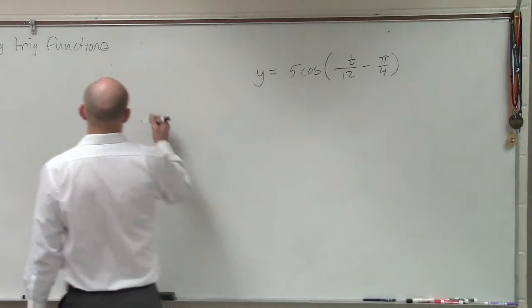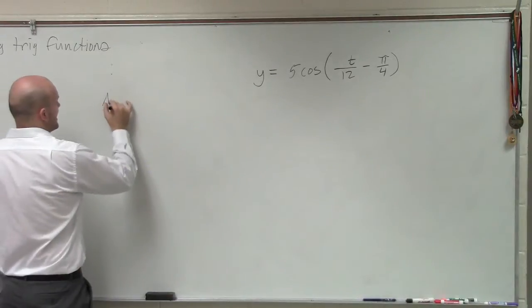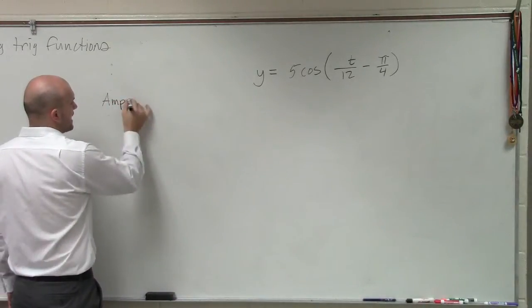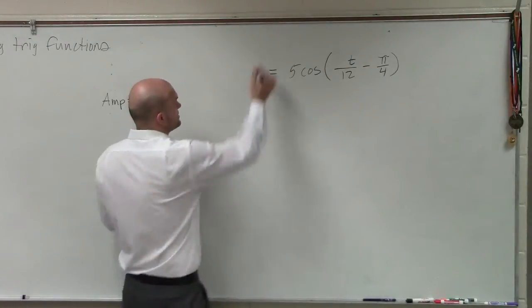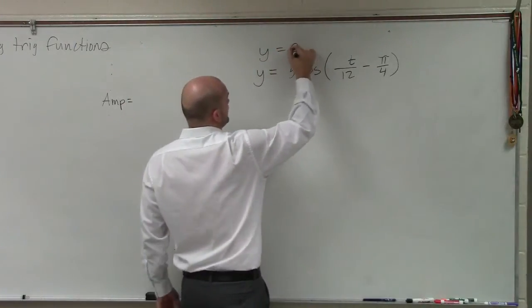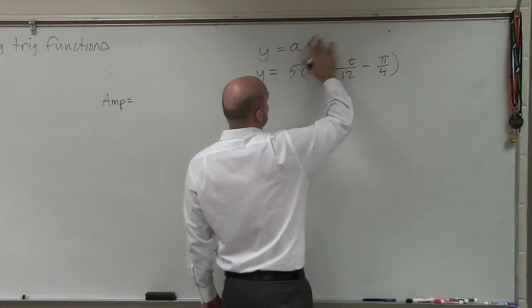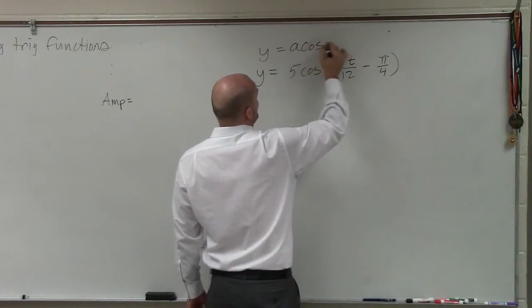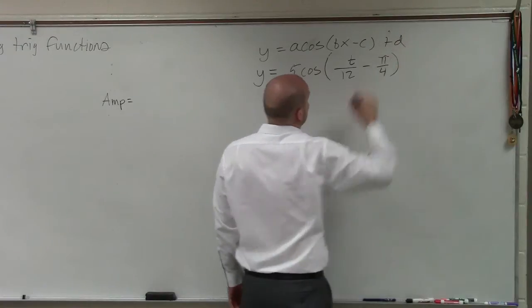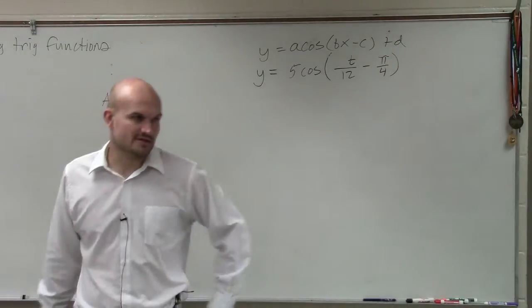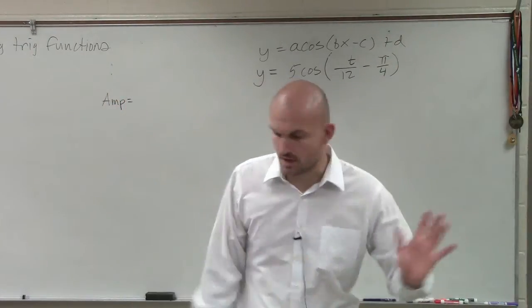So first thing you need to know, first thing let's go over, is determining the amplitude. Remember, the amplitude—well, first of all, let's kind of, if we need to remember all this stuff, let's write in the general form here of a times the cosine of bx minus c plus d. So here's an example of a cosine function.